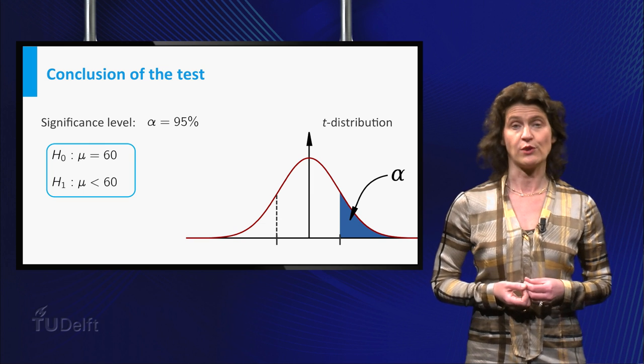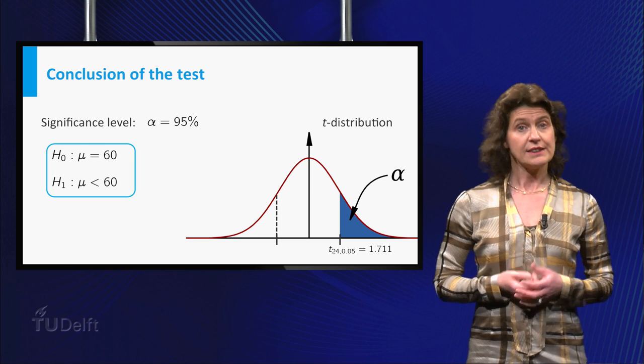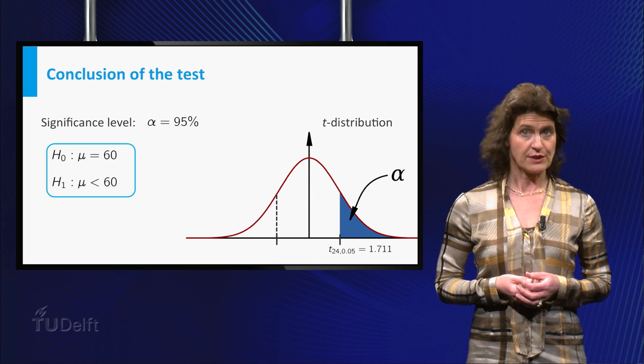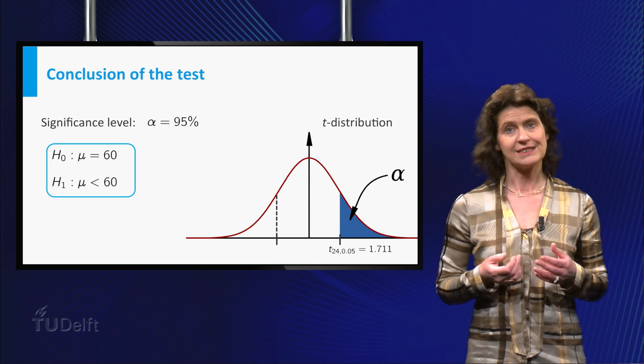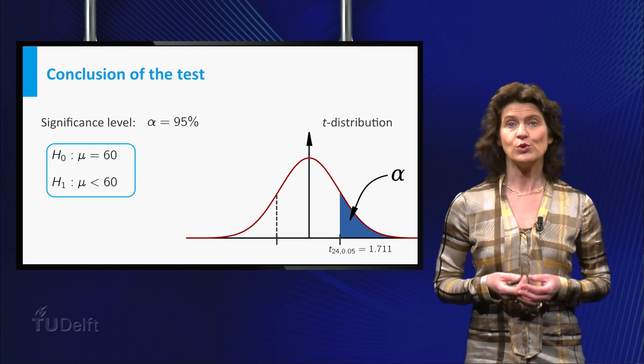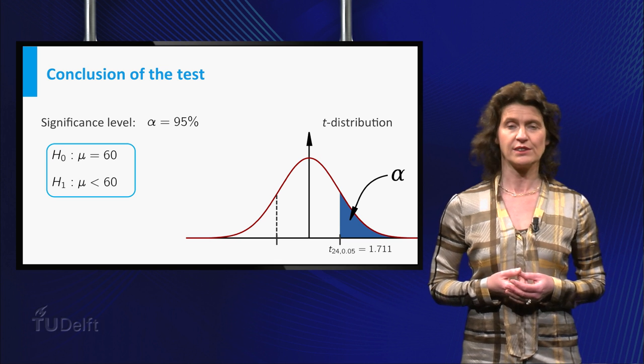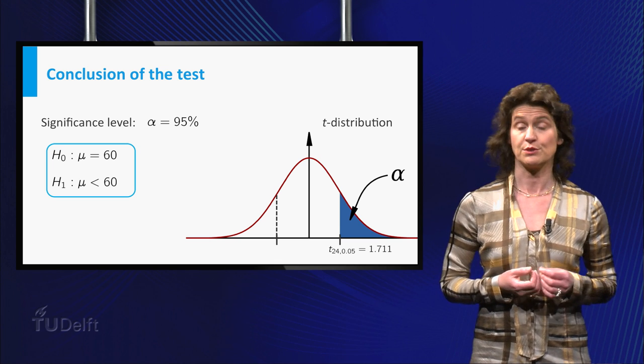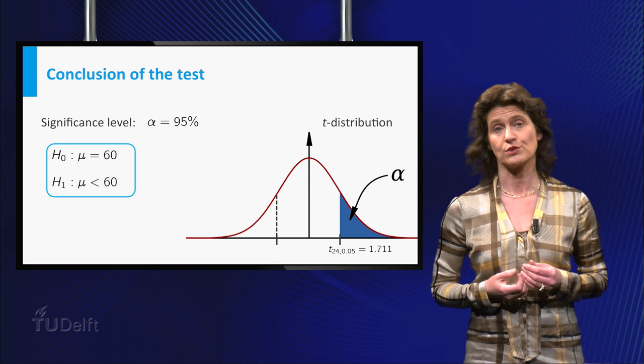This critical value can be found in a table. In this case, it is 1.711. Because the test is one-sided, you need to take the critical value of the t24 distribution at alpha equals 0.05.